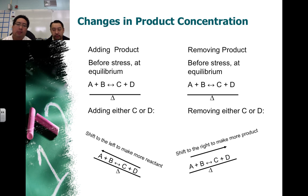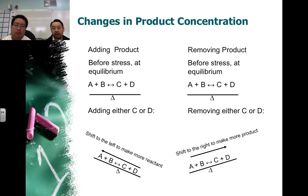Same thing on the other end, where you're removing product — you remove C or D — and as a result, the right-hand side of the equation shifts upwards. So, we see that the equilibrium is shifting to the right or shifting towards product. More product, as a result, is going to be made.